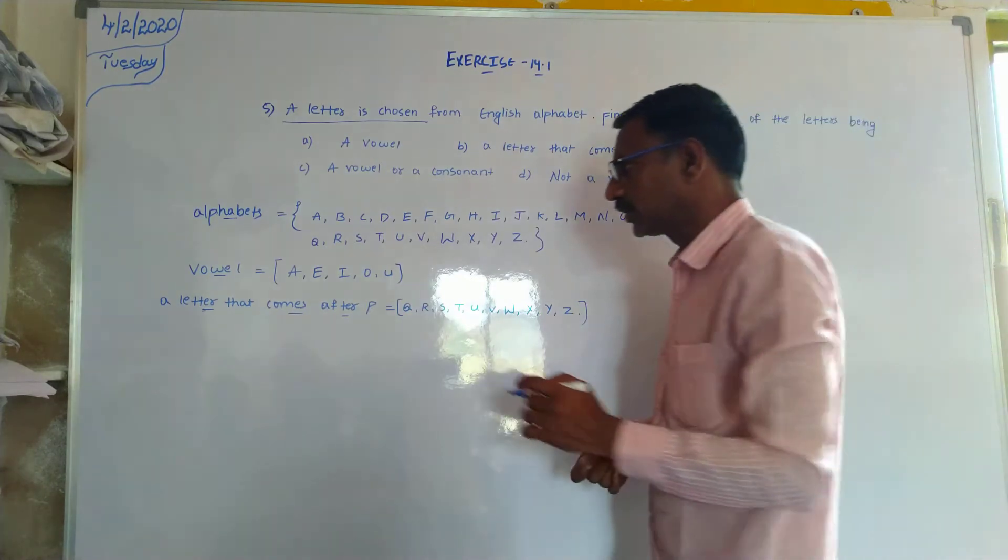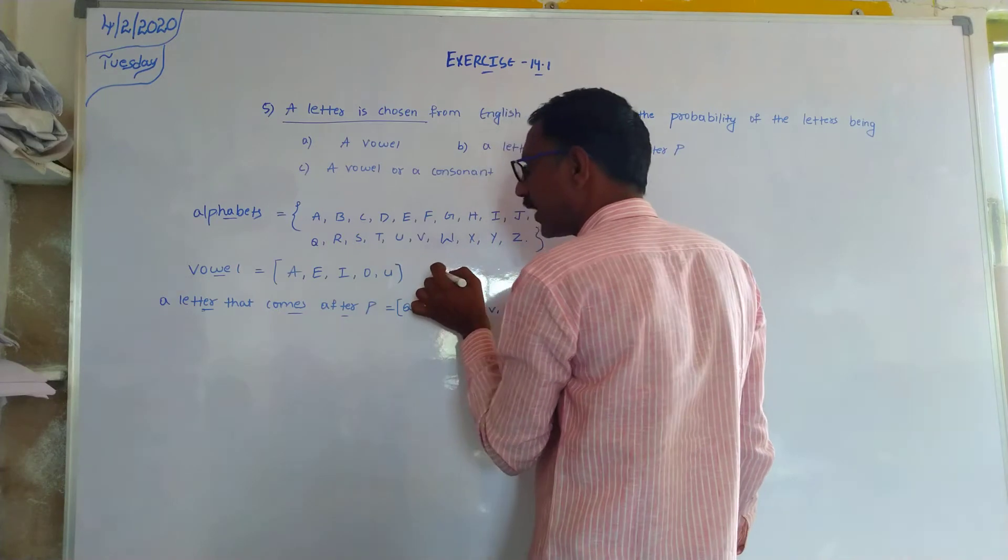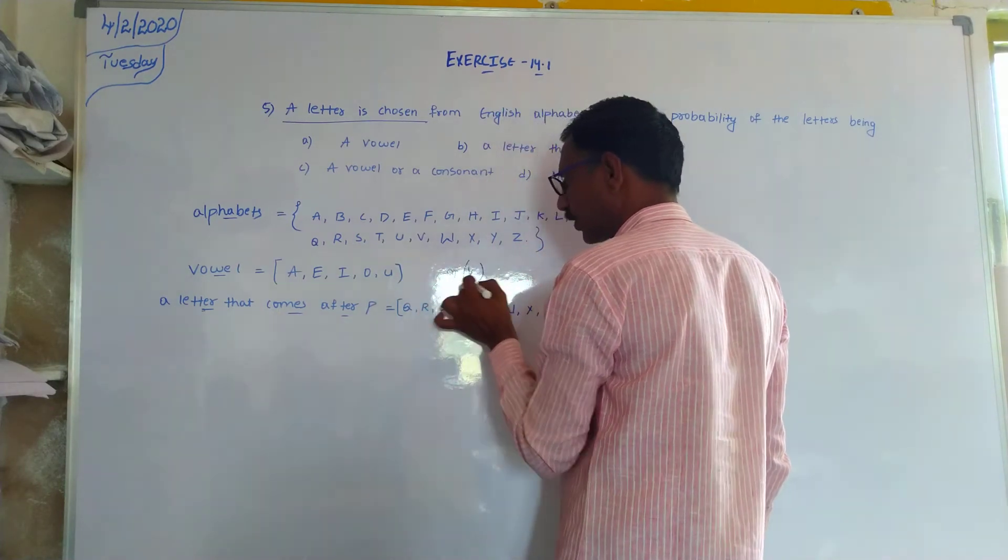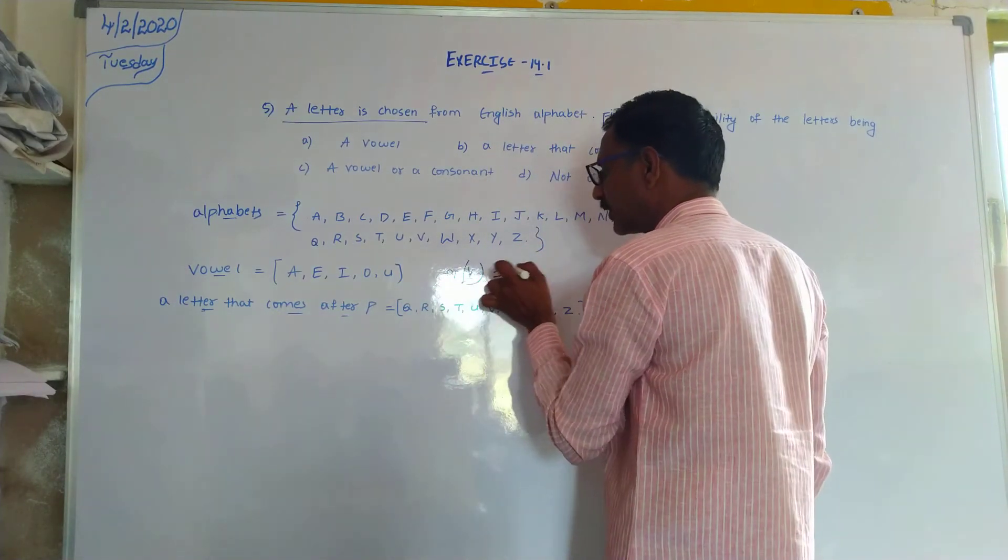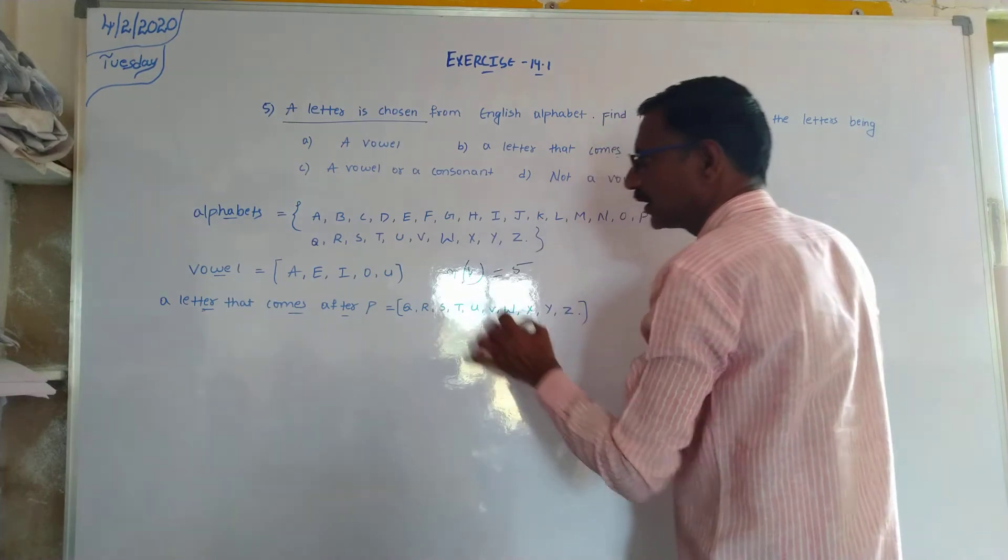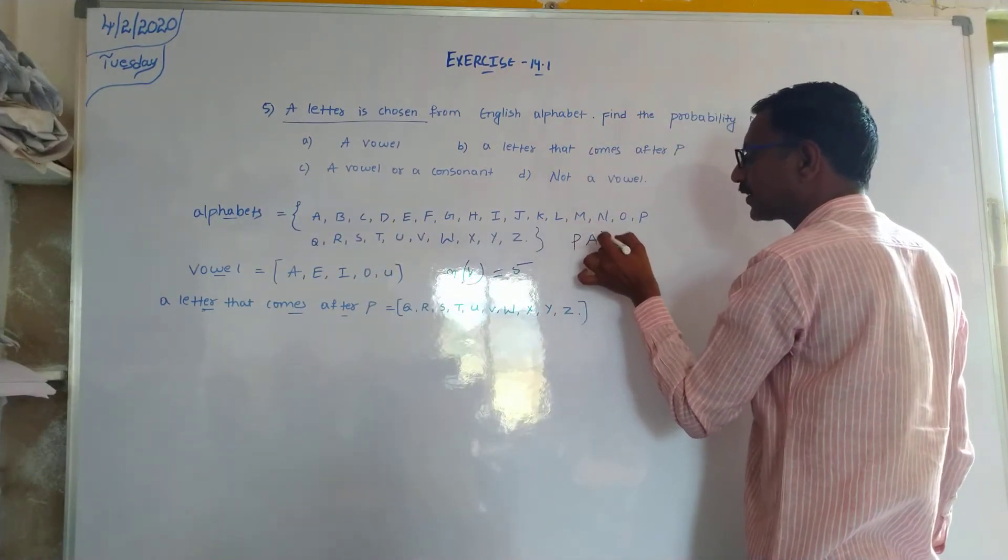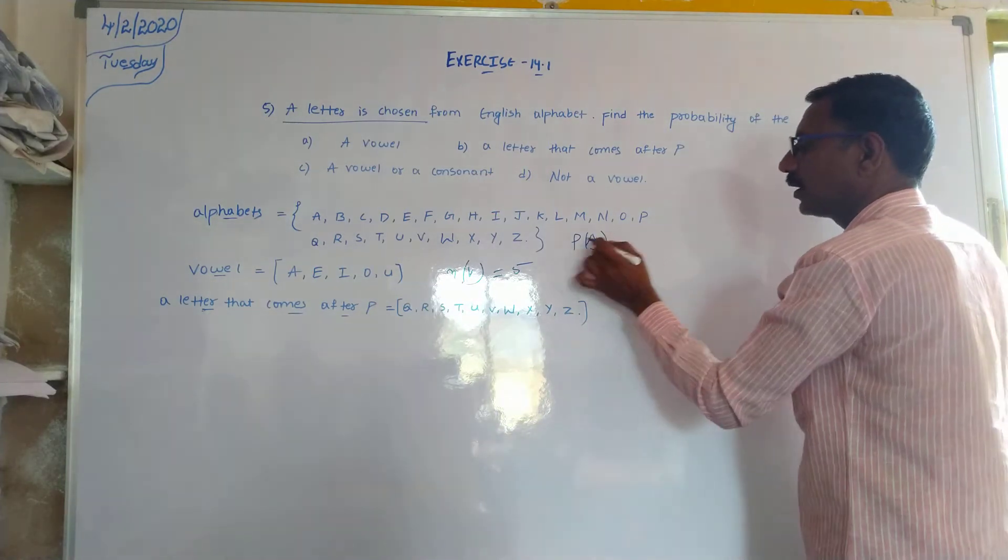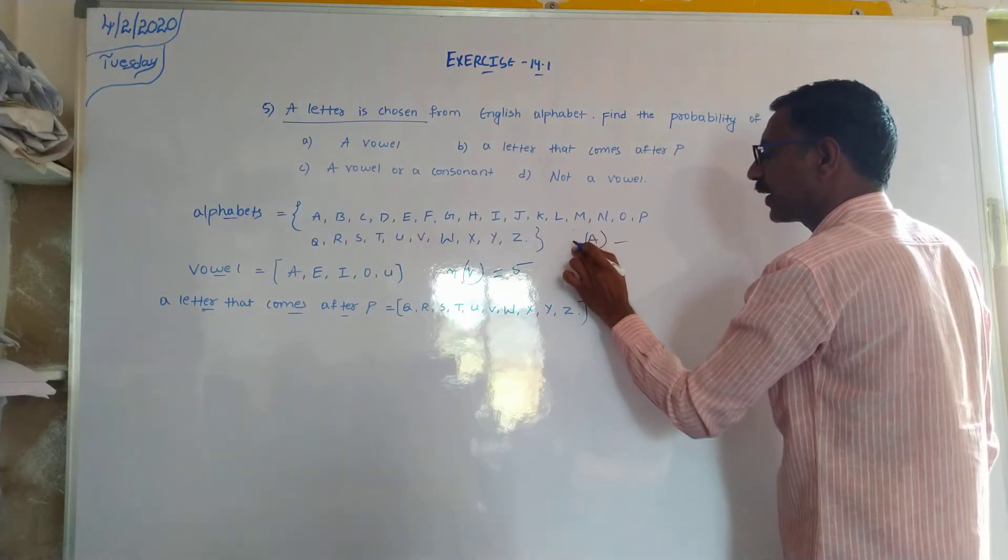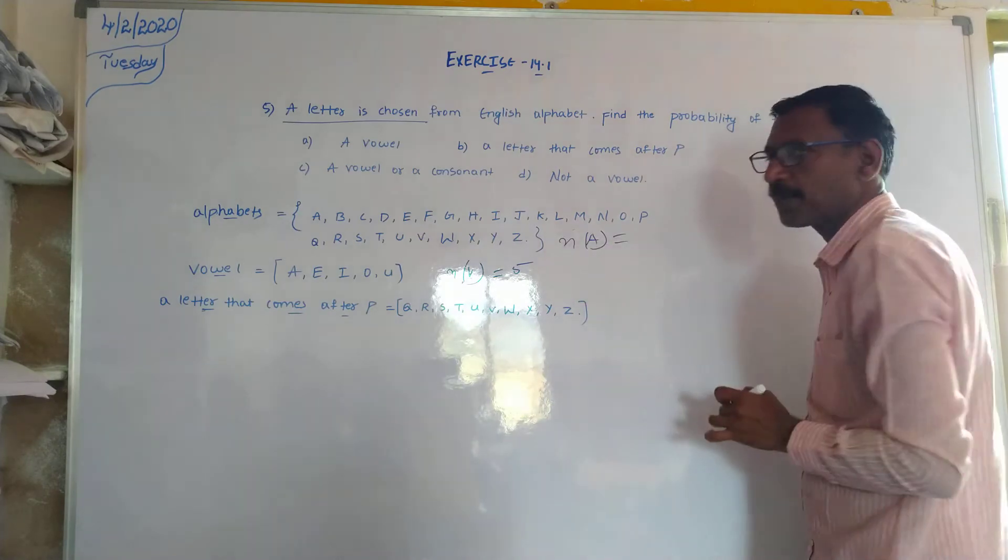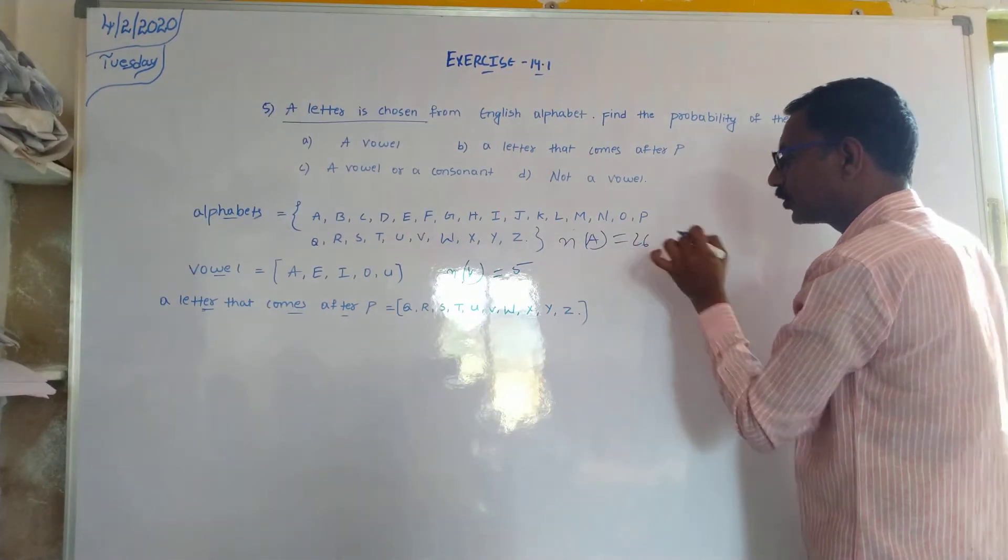A letter is chosen from English alphabets. All alphabets, yes, stands for all alphabets. Number of, you should write number of all alphabets. How many are there? Yes, 26.